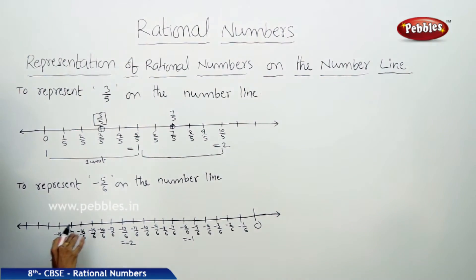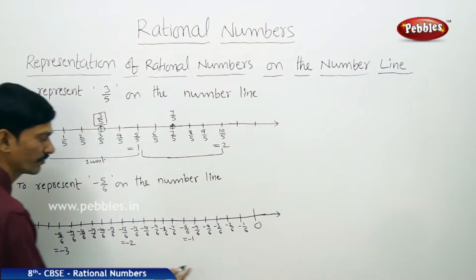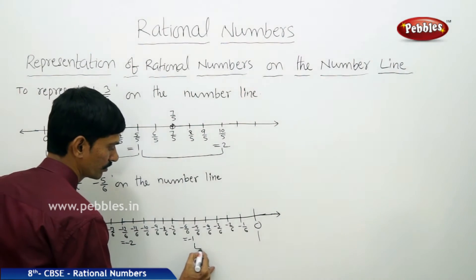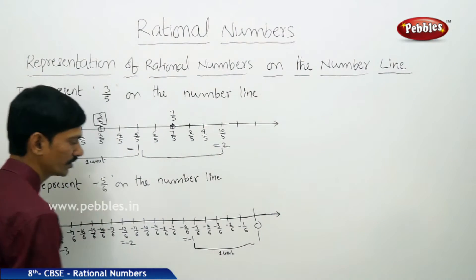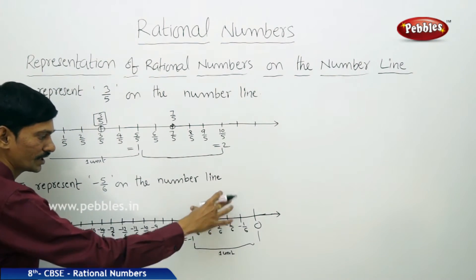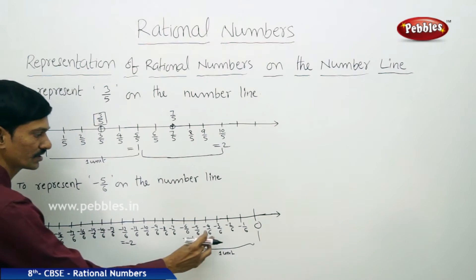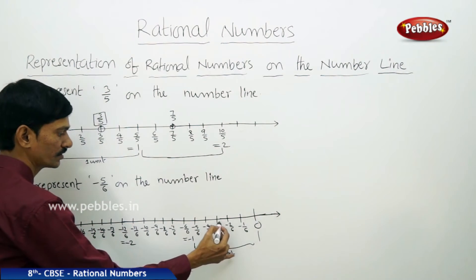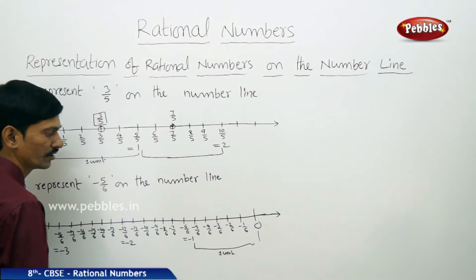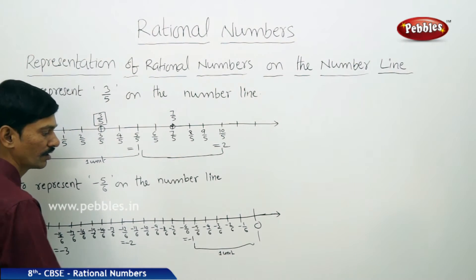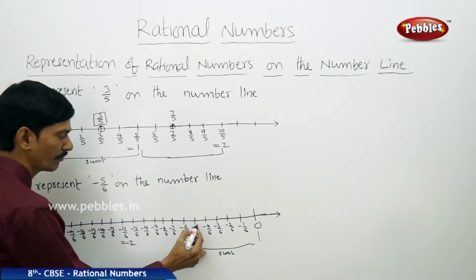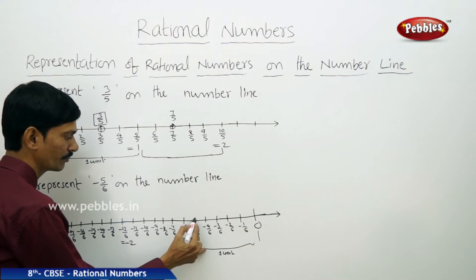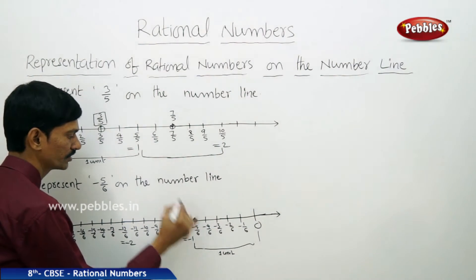So to the left of 0 there are 3 units. The first unit from 0 to minus 1 has been divided into 6 equal parts. Out of 6 equal parts, we are considering the fifth part, so this is called minus 5 by 6. Minus 5 by 6 is represented here on the number line. If you want to represent minus 13 by 6, it is also located on the number line accordingly.